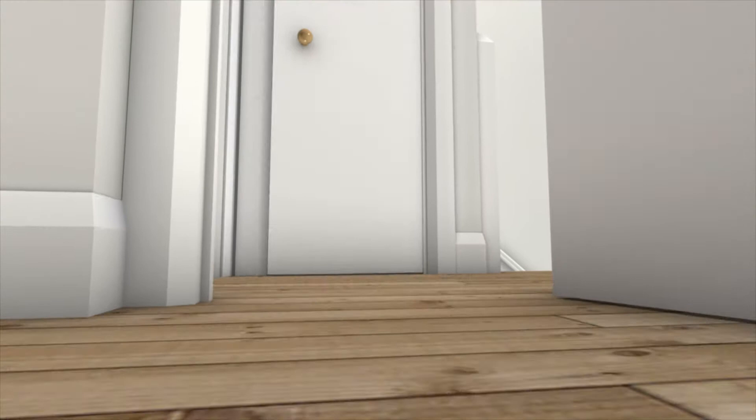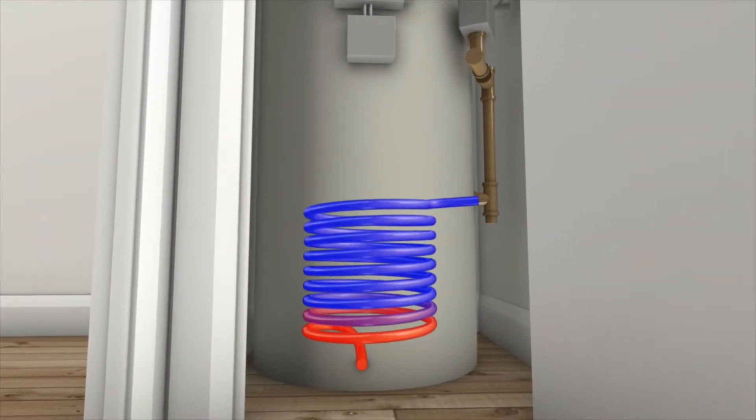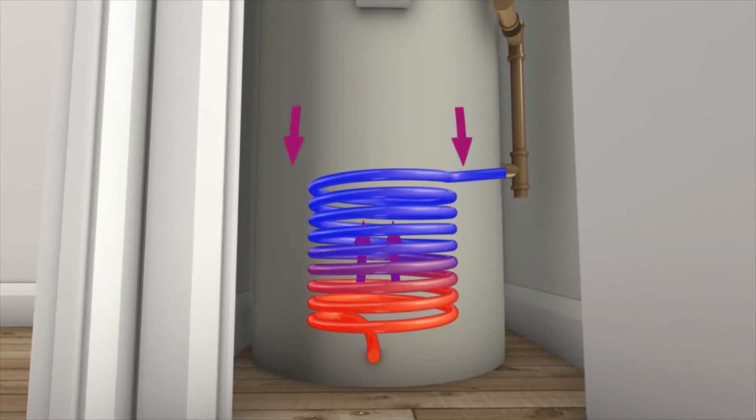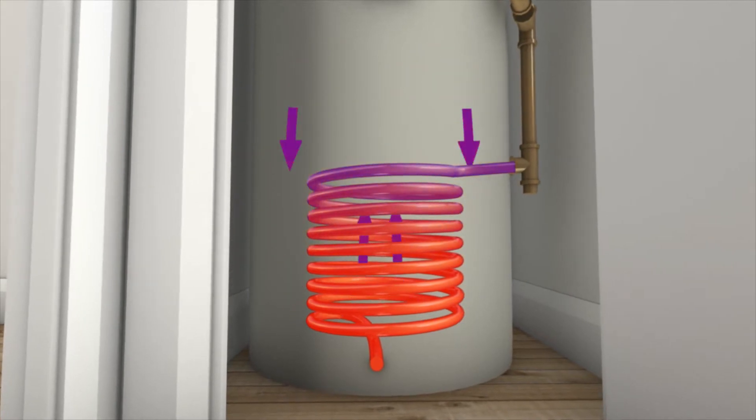In the UK, hot water cylinders have traditionally incorporated an internal coil to transfer heat energy from the heat source to the water inside the cylinder, using a process called natural convection.